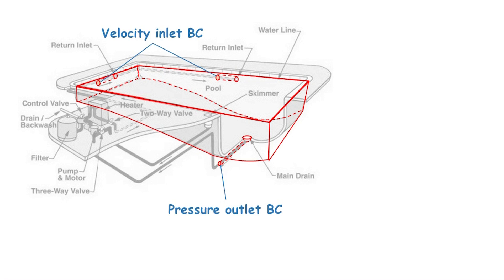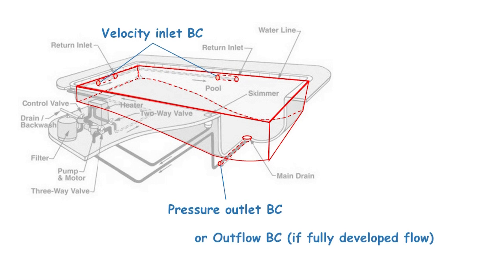If we can assume that the pipe flow at the outlet is fully developed, then we can also use the outflow boundary condition. However, since the static pressure can be easily obtained and it may be hard to ensure the flow is fully developed, the pressure outlet boundary condition would be a better option than the outflow boundary condition.